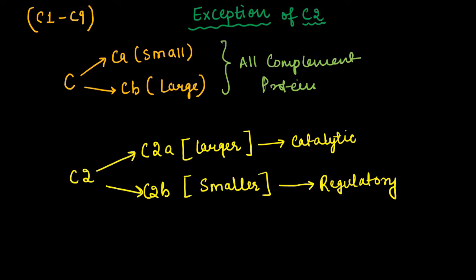We are done with all the basics. If we want to reframe the whole definition of complement protein or complement system, we can say that the complement system is a part of the immune system that enhances — or complements — the ability of antibodies and different phagocytic cells to clear microbes from the body. Whenever there is an attack of any antigen, the complement protein enhances the activity of our immune cells to complement our immune system so it performs best against any foreign pathogen.